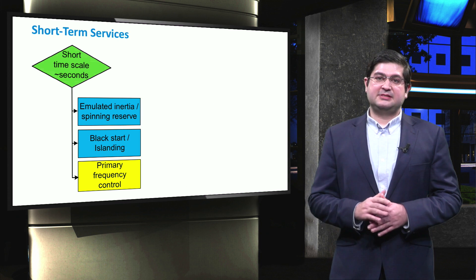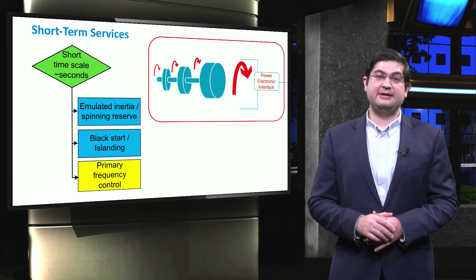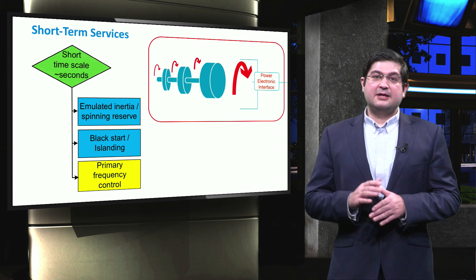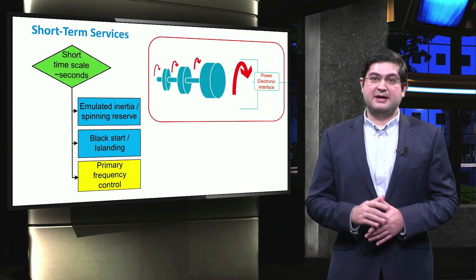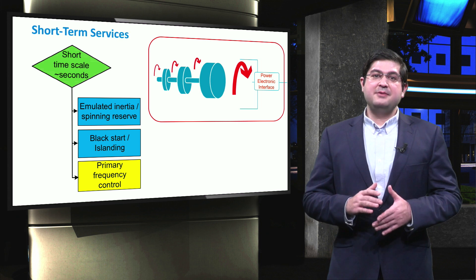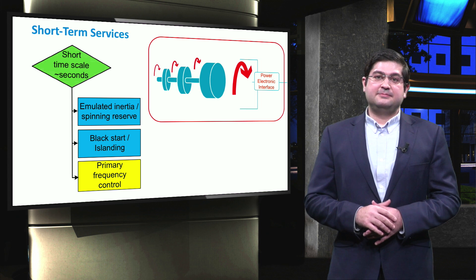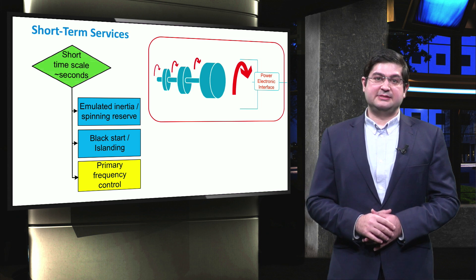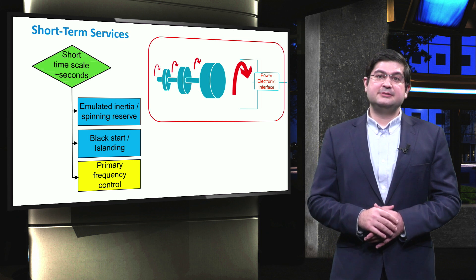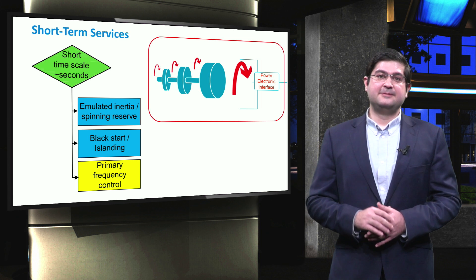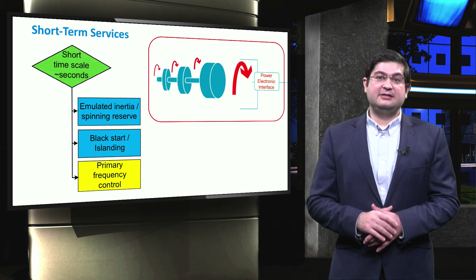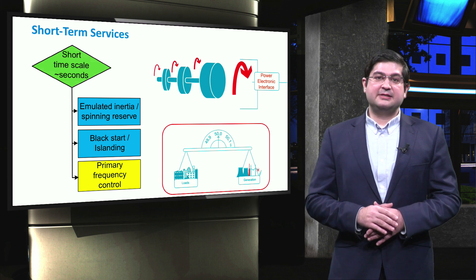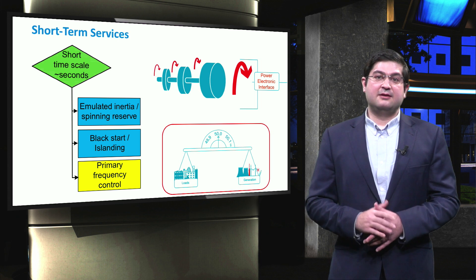Within a short time, like several seconds, units with rotating mass can provide inertial support, which releases the kinetic energy stored in the shaft of the unit. Though electronically interfaced units do not have any rotating mass, they can provide inertial support by emulating the behavior of the rotor. Another short-term service within the context of microgrids is islanding and black start. Note that in traditional power systems the black start may take up to several hours; however, in microgrids it can be conducted fast, even within several seconds. The most commonly known service is primary frequency control, which intends to suppress frequency deviation right after a contingency event like the outage of one unit.